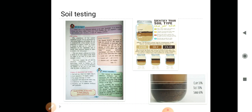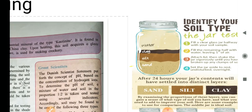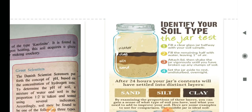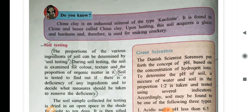Now, let us go to the structure here. What is given here to identify the different types of soils. Here you can see the soil type. In this jar, you can see that clay is there, silt is there, sand is there. These are the various types of soil testing. Do you know, china clay is an industrial mineral found in the type of kaolinite. It is found in china and hence it is called as china clay. Upon heating, this soil acquires a glaze and hardness and therefore is used for making crockery.